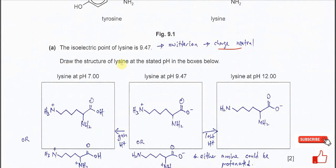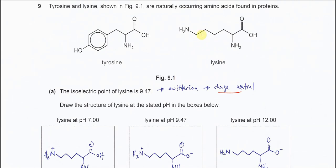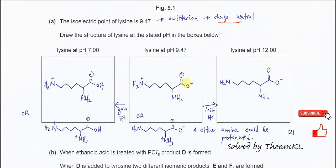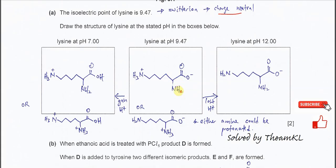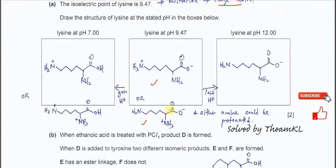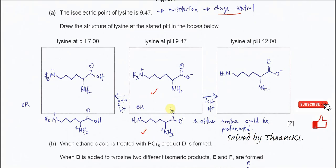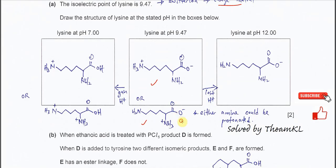Draw the structure of lysine at the stated pH in the boxes below. Lysine is this one. Starting with lysine at pH 9.47 — the isoelectric point — we know it is charge neutral. You can give either of these structures. Following the isoelectric point strictly, it should be the zwitterion form because this is the side chain and this is the backbone of the amino acid. Either one is acceptable.